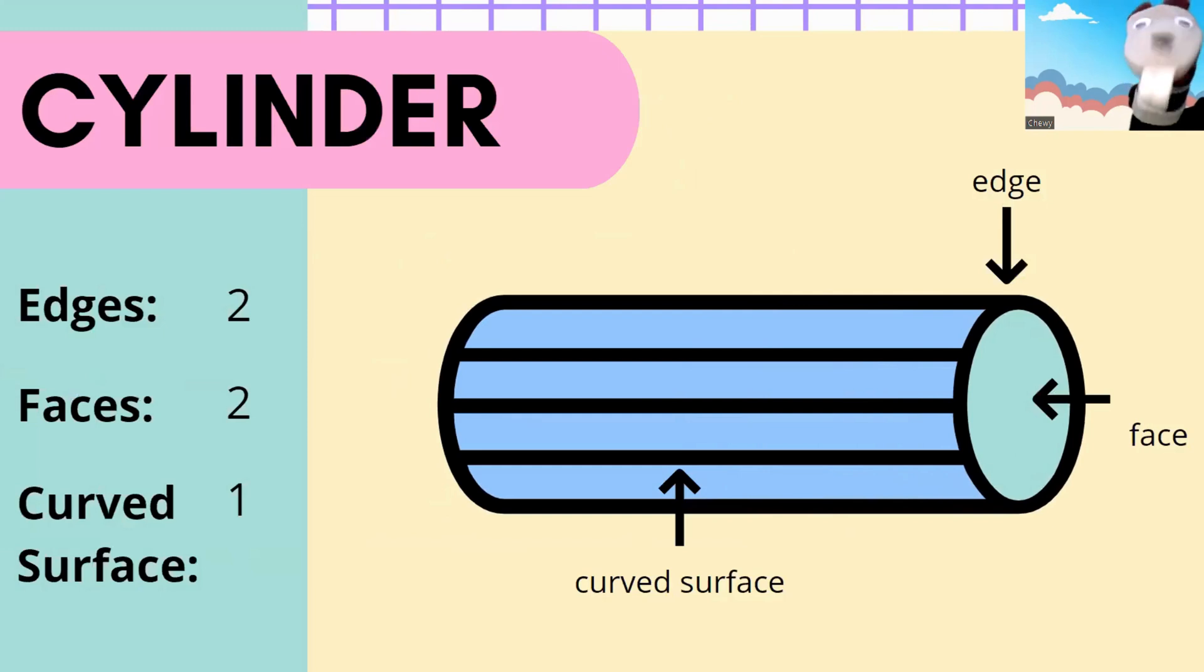If you said cylinder, you were right! Smarty! Now, a cylinder does have two edges, two faces, and it has a curved surface. Nice job! Alright! Let's learn some more!